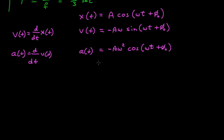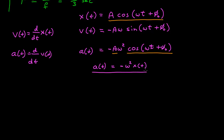Notice that A cosine(ωt + φ₀) is in fact the position function x(t). So the acceleration equals negative omega squared times x(t). Whatever value the position takes, the acceleration points in the opposite direction — omega squared is a positive number, and the minus sign flips the direction. This is a key insight into oscillatory motion: the acceleration always points opposite to the displacement.